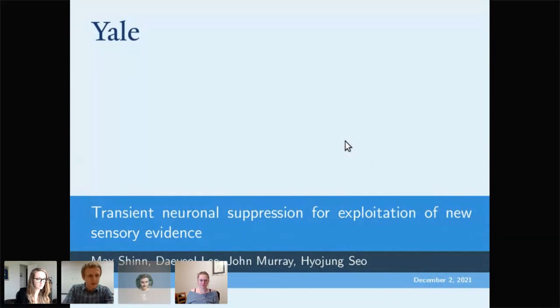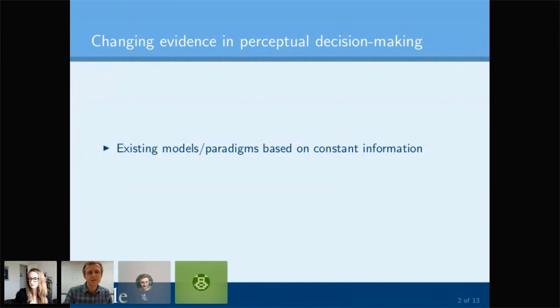Thank you. So I'm going to talk today about some work that I did during my PhD with John Murray, Dale Lee, and Hyo-Jung Seo. It's going to address one question: during perceptual decision making, what happens when the evidence changes? The problem with studying what happens when evidence changes is that right now, most of the task paradigms, most of the models that we use, involve some constant stream of evidence that's roughly similar over time. We don't really have the full set of tools yet to understand what happens when evidence changes.